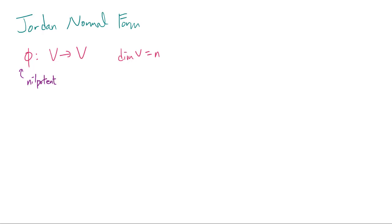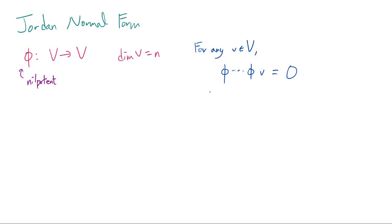What I mean by nilpotent is that for any vector v in V, if we start with v and we apply phi to it enough times — so we do phi(v), then phi(phi(v)), and so on — eventually there is going to come a point where this thing is going to be zero. We have seen many examples of nilpotent matrices up to this episode.